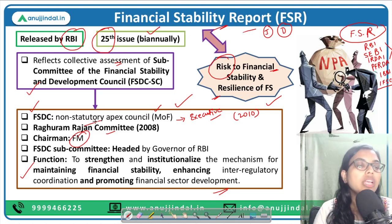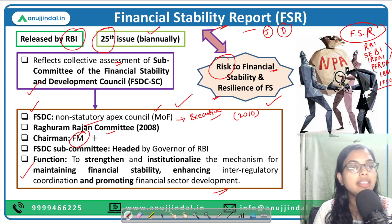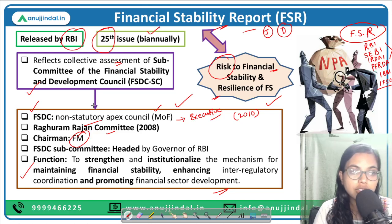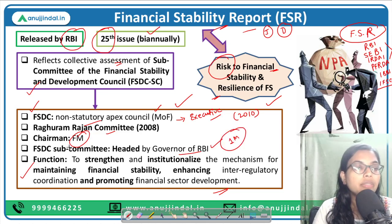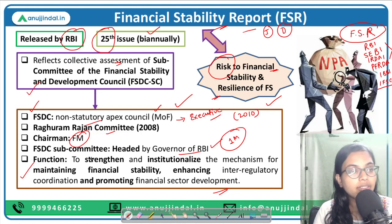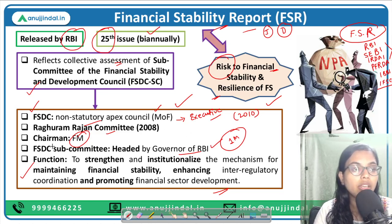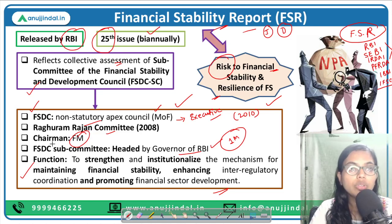This council is chaired by the Finance Minister of India — so at present it must be chaired by Nirmala Sitharaman. The subcommittee of the Financial Stability and Development Council is headed by the Governor of RBI. A one-marker question can come from here: who heads the FSDC subcommittee? The answer is the Governor of RBI.